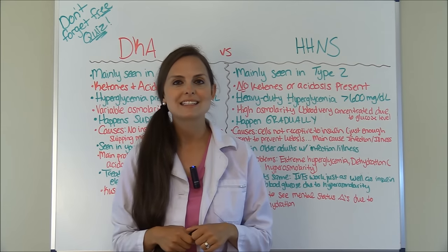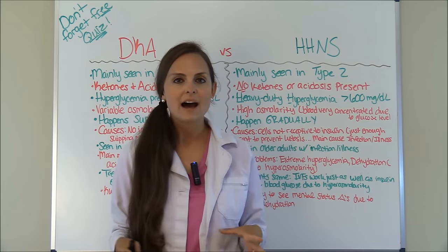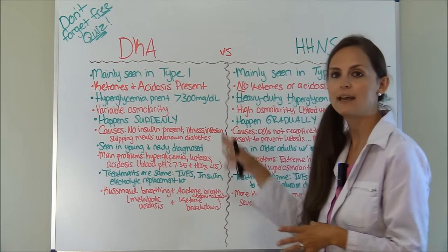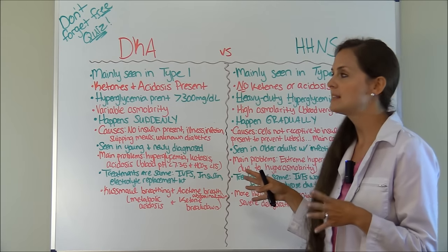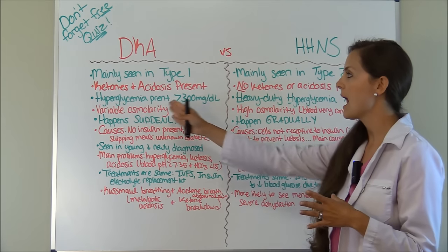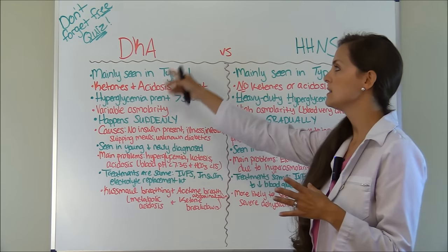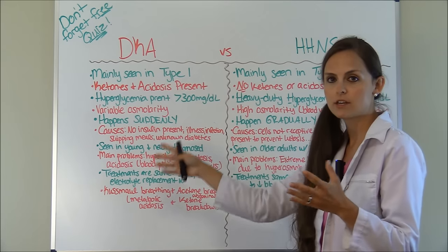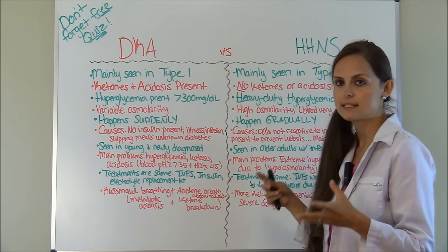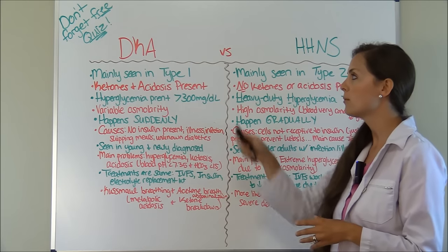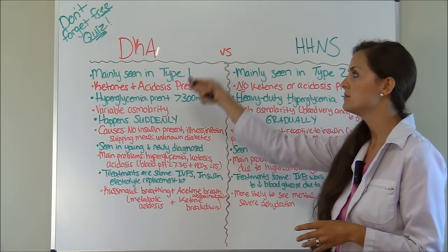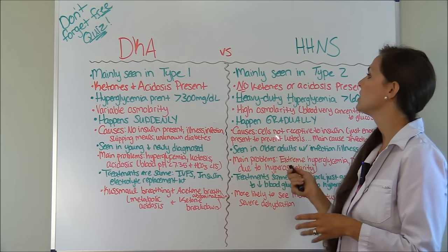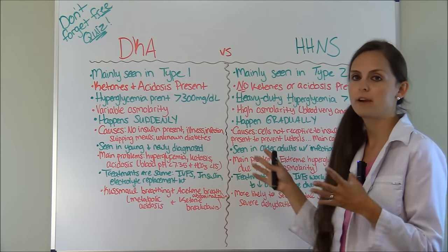Let's get started. Behind me I have a table with the differences between the two so you can easily see it. We're going to go through DKA and then HHNS and compare the two.